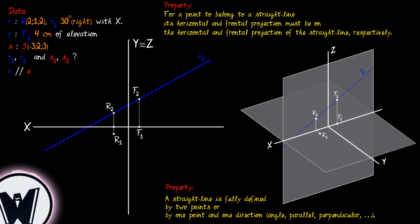Having the two horizontal projections of points R and F, we can now draw the horizontal projection of the straight line R, R1.